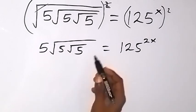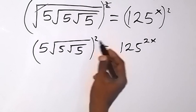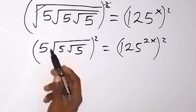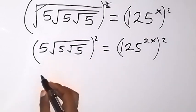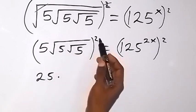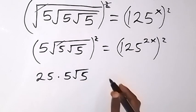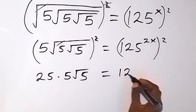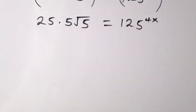Again, let's take the square on both sides. When we square the left side, the square affects 5, giving us 25, and it also affects the root — squaring cancels the square root, leaving 5 root 5. On the right side, the power of 2 multiplies the existing power, giving us 125 raised to power 4x.